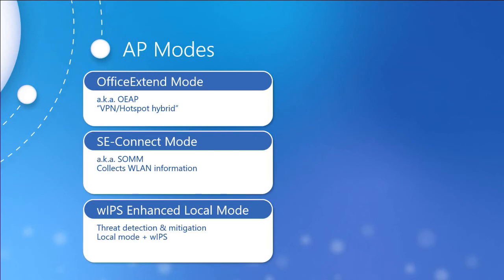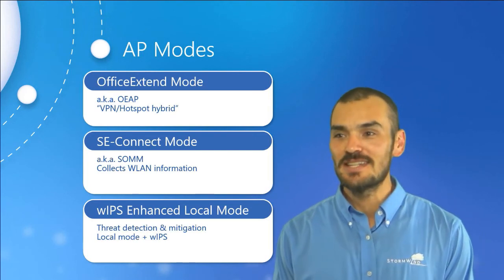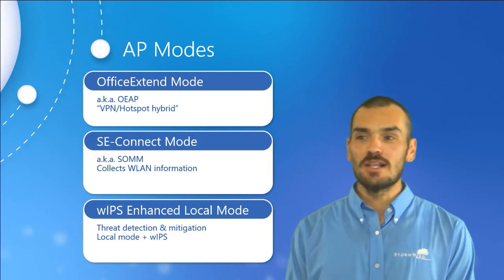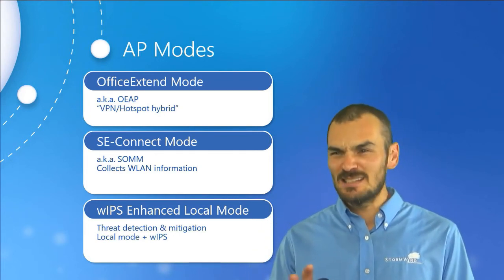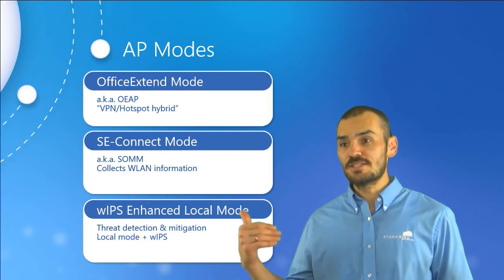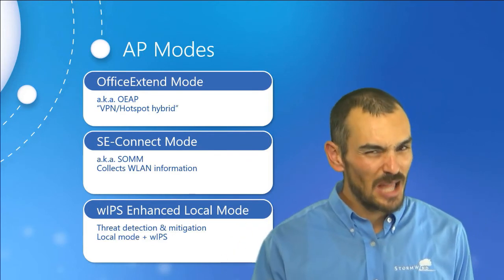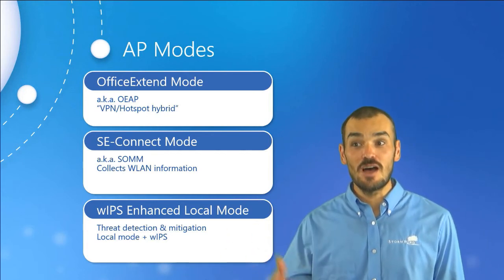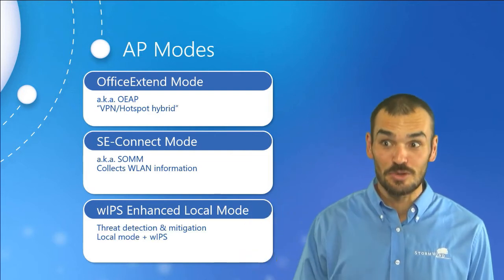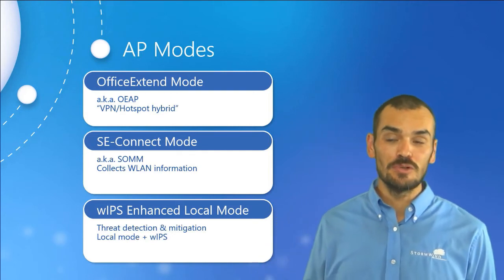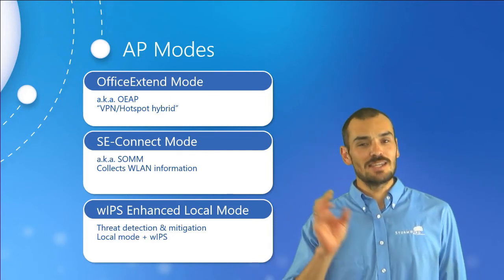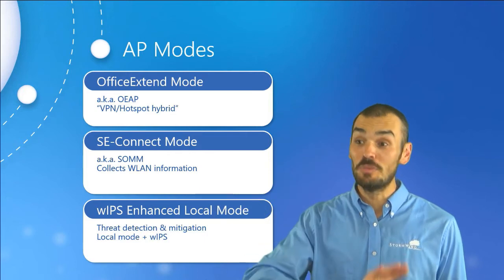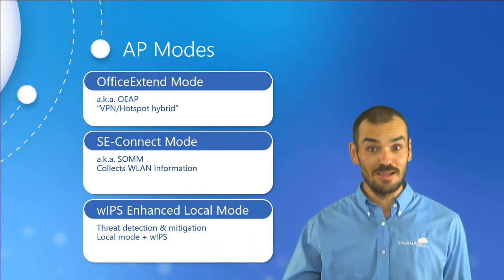Rounding out this discussion, we have the Office Extend Mode, the Office Extend Access Point, or OEAP. This is designed for teleworkers as a kind of VPN/hotspot hybrid. It's unable to automatically discover a controller, so it's not a true lightweight access point in that regard — you have to use the GUI or the command line interface to specify which controller to connect to. Multiple wireless LANs are configurable in this mode, but the best practice is to configure the access point, lock down its configuration, and tell the user to just plug it in at home and play it — don't mess around with it.